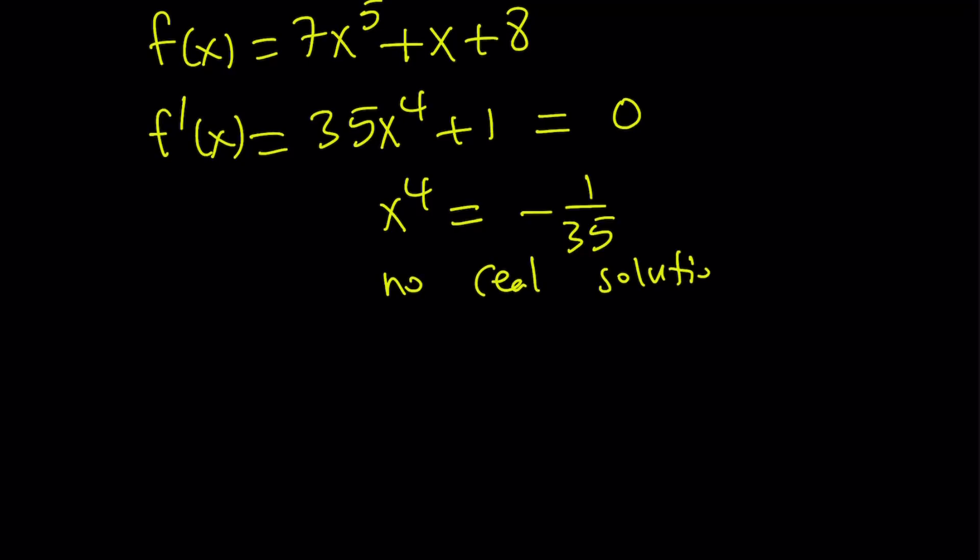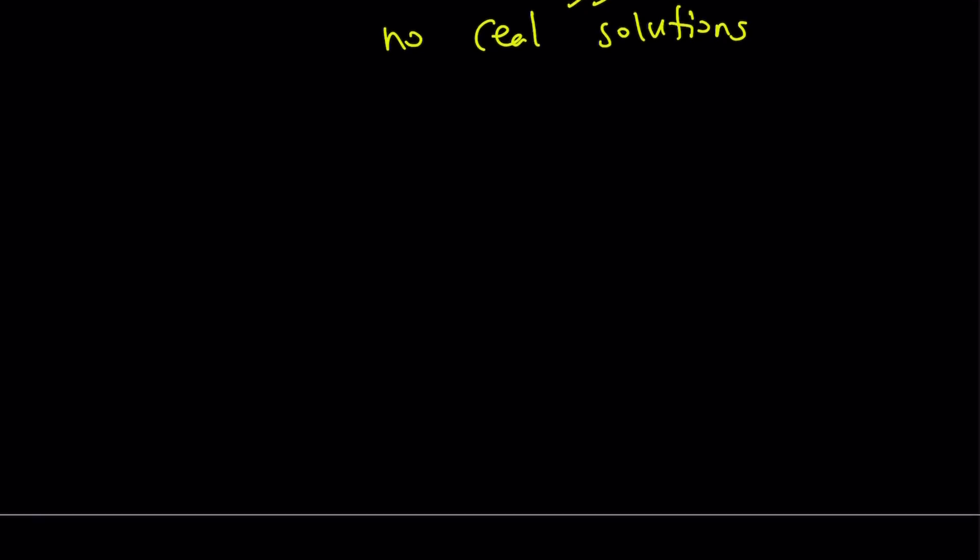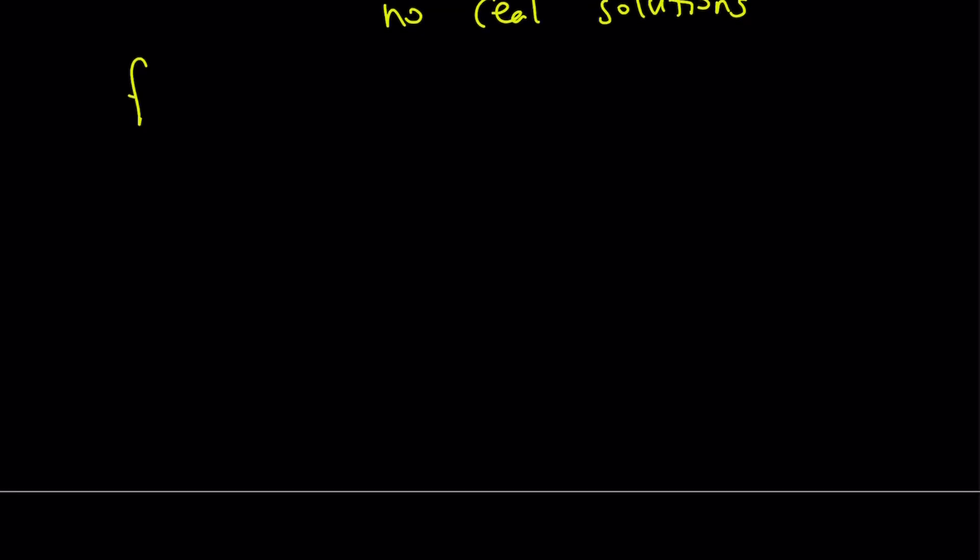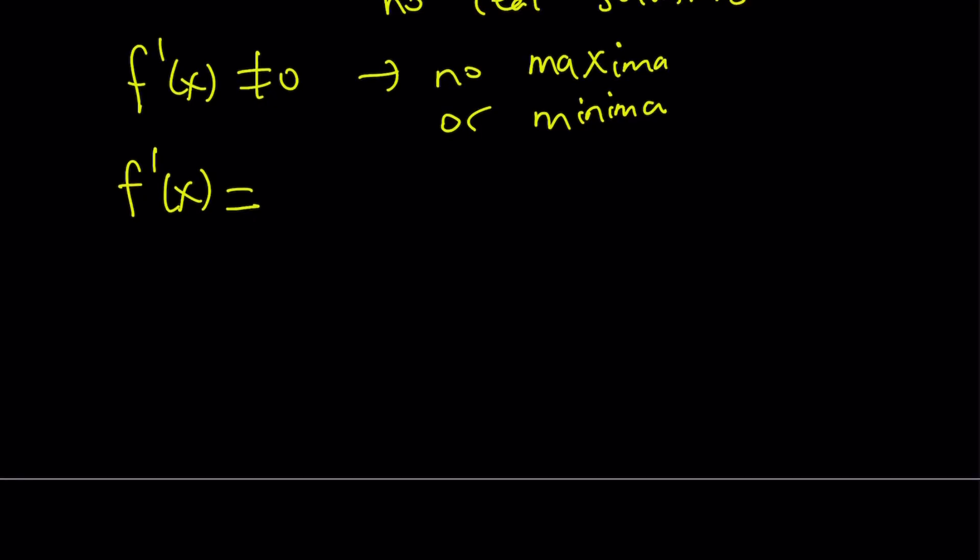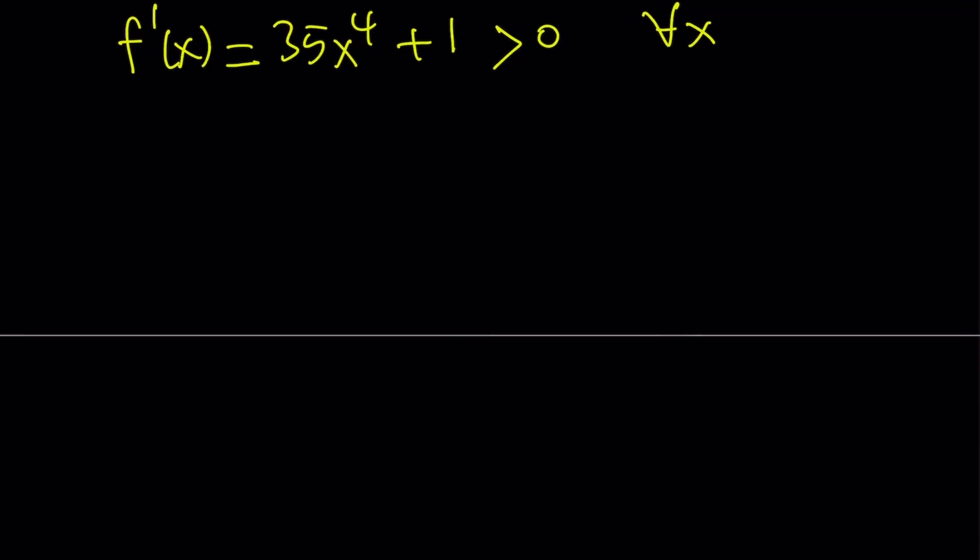Now what is that supposed to mean? This function has no critical points. No maxima or minima. Because the first derivative cannot equal 0. What is that supposed to mean though? Let's go back to the derivative. The first derivative was 35x to the 4th plus 1. And notice that this expression is always greater than 0 for all x values in the domain. Great.